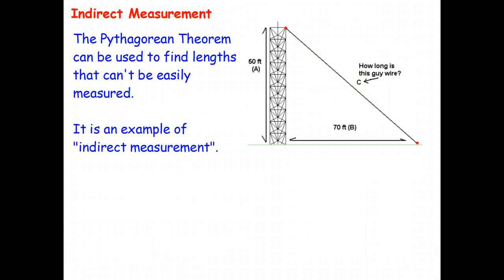It turns out the Pythagorean theorem in modern day life is used often to find unknown lengths. So for example, we've got a tower here 50 feet high. The distance from the tower to where we're going to attach the guy wire to the ground is 70 feet. And we can use the Pythagorean theorem to work out what the length of the guy wire has to be.